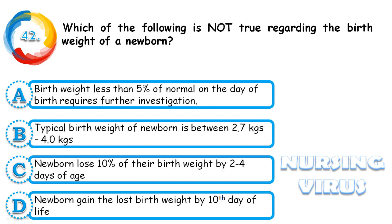Question 42: Which of the following is not true regarding birth weight of the newborn? Option A: birth weight less than 5% of normal on the day of birth requires further investigation. Option B: typical birth weight is between 2.7 kg to 4 kg. Option C: newborns lose 10% of their birth weight by two to four days of age. Option D: newborns regain their birth weight by the 10th day of life. The correct answer is A — a 5% weight loss on the day of birth does not require further investigation.